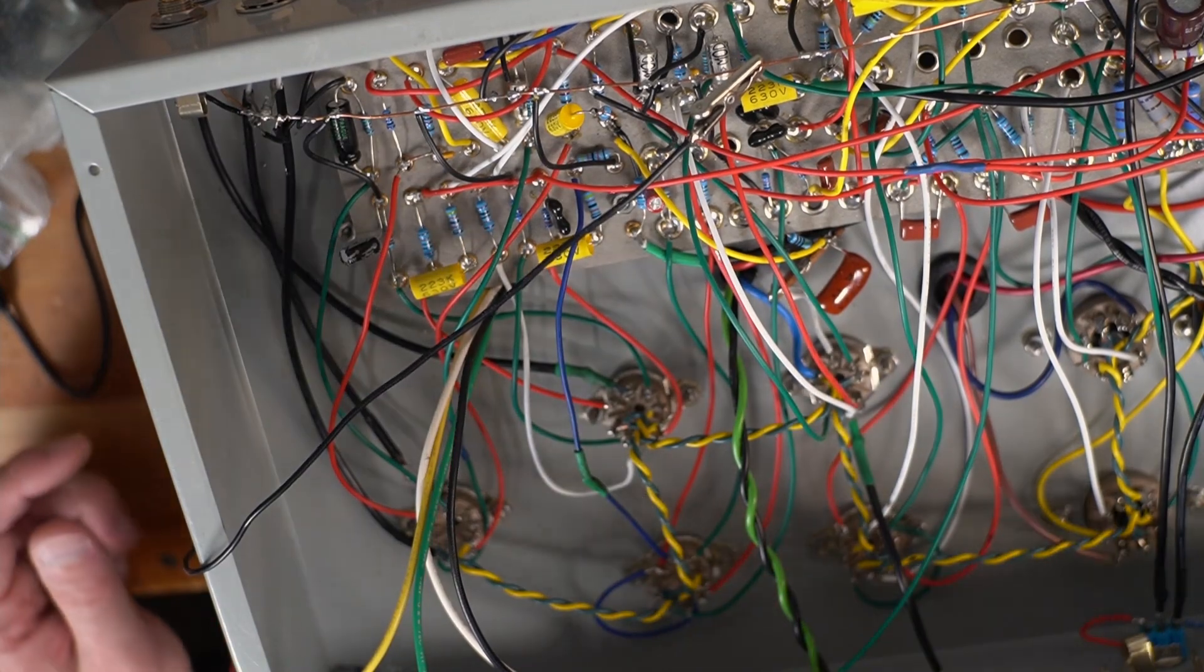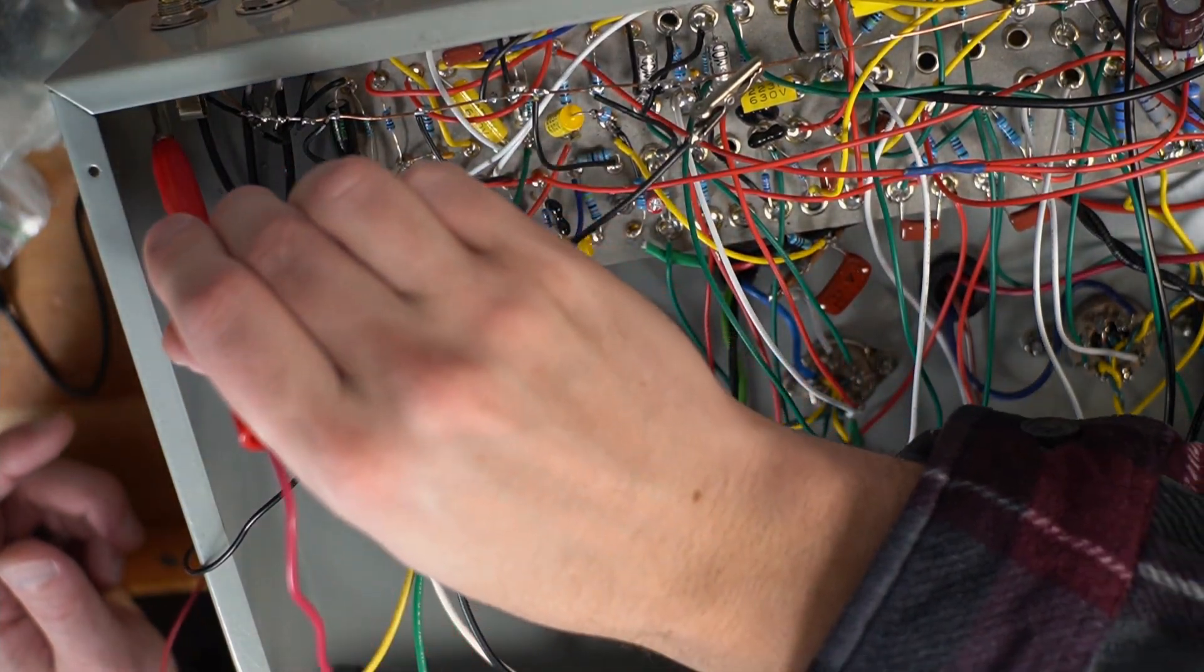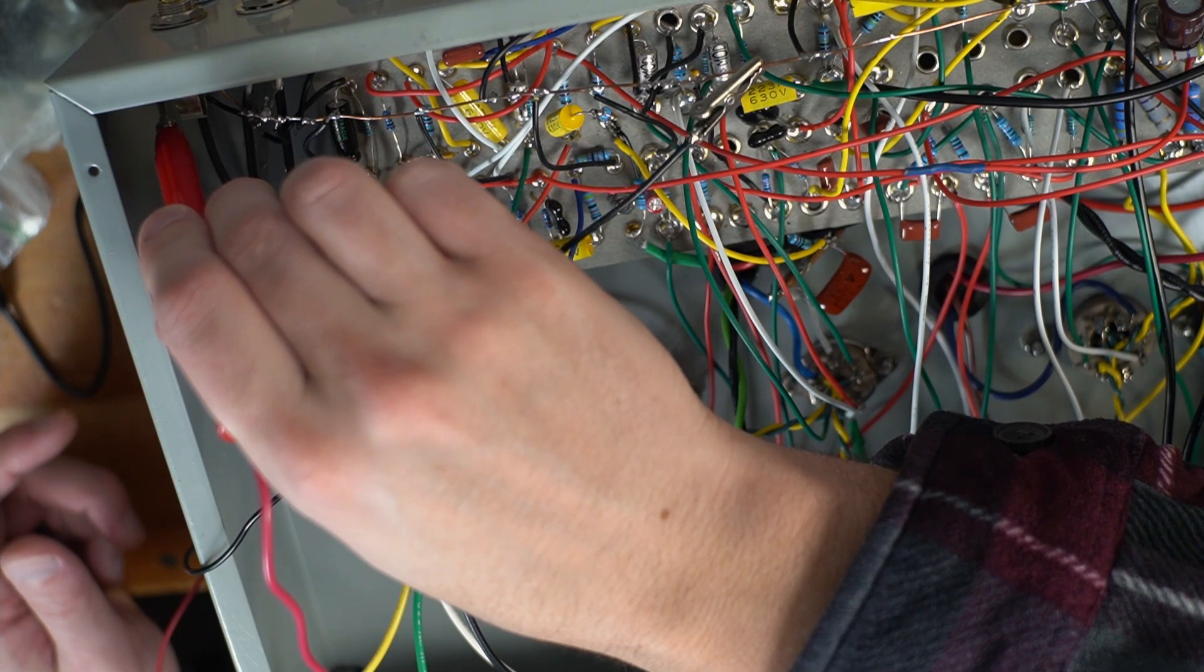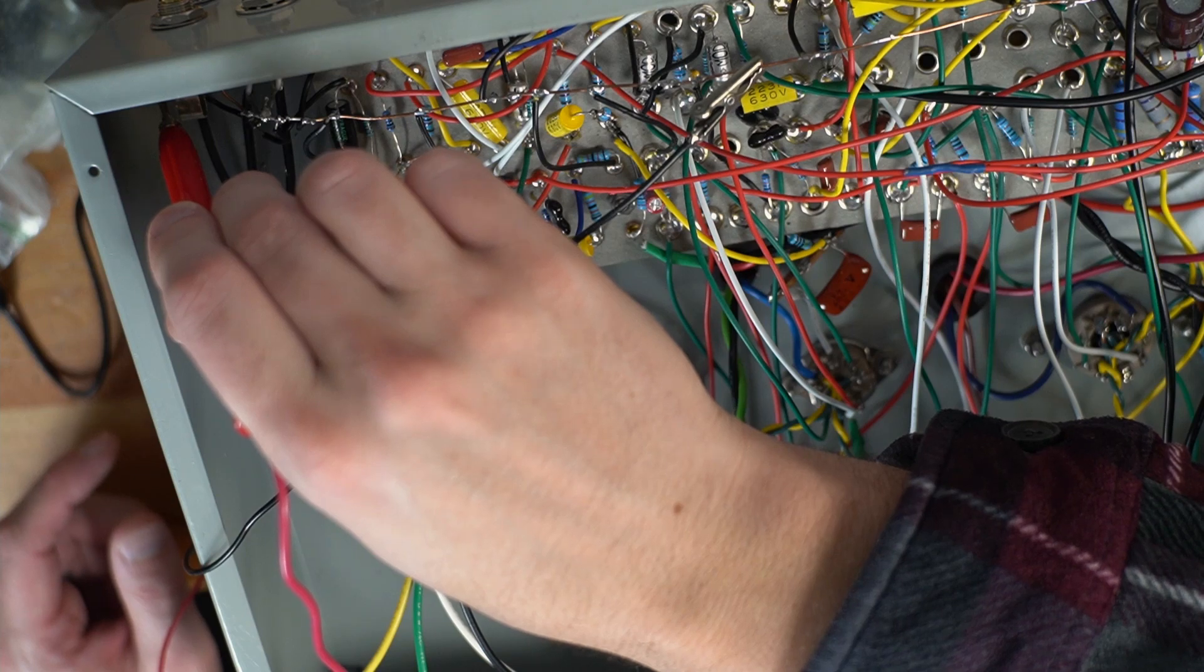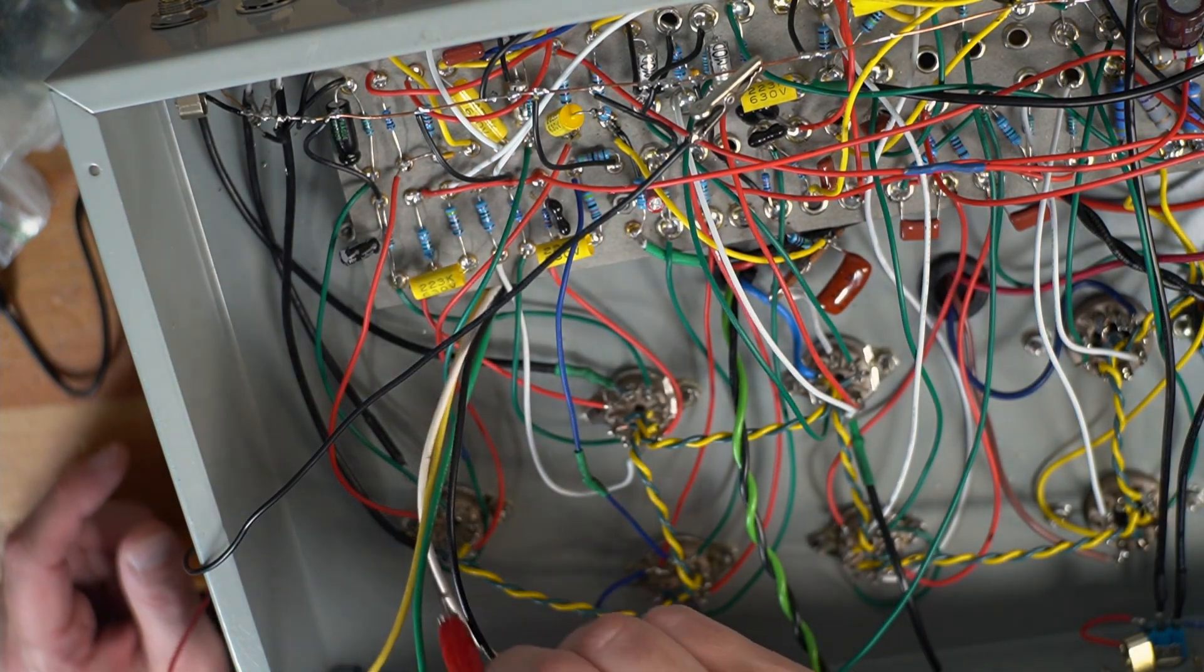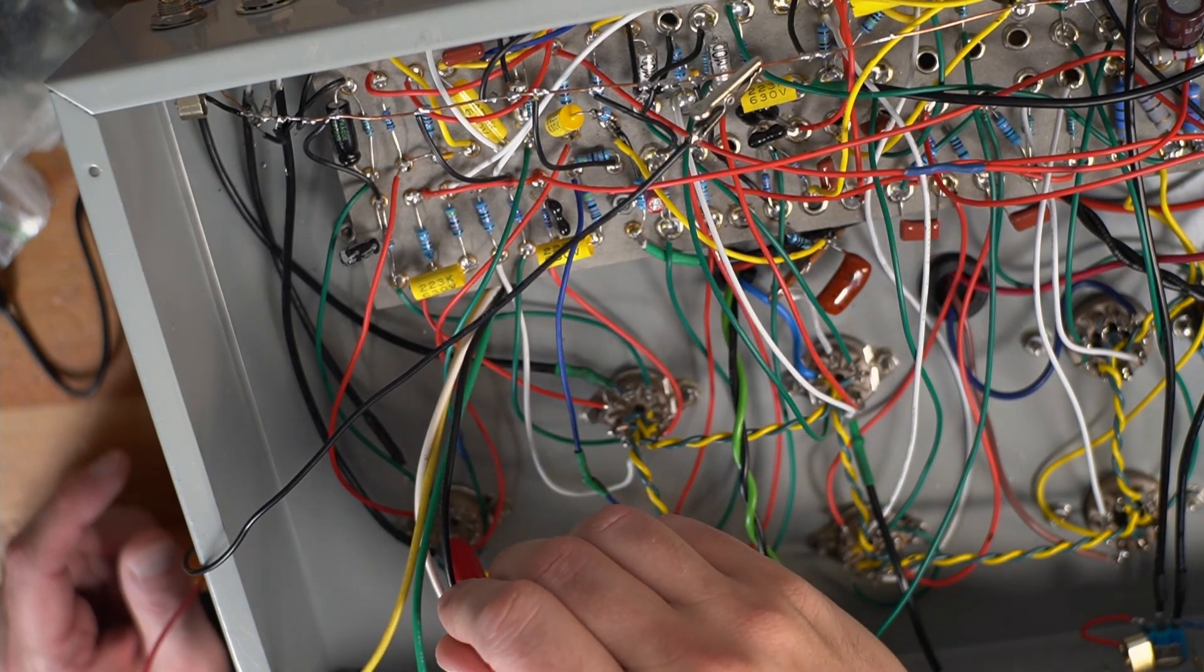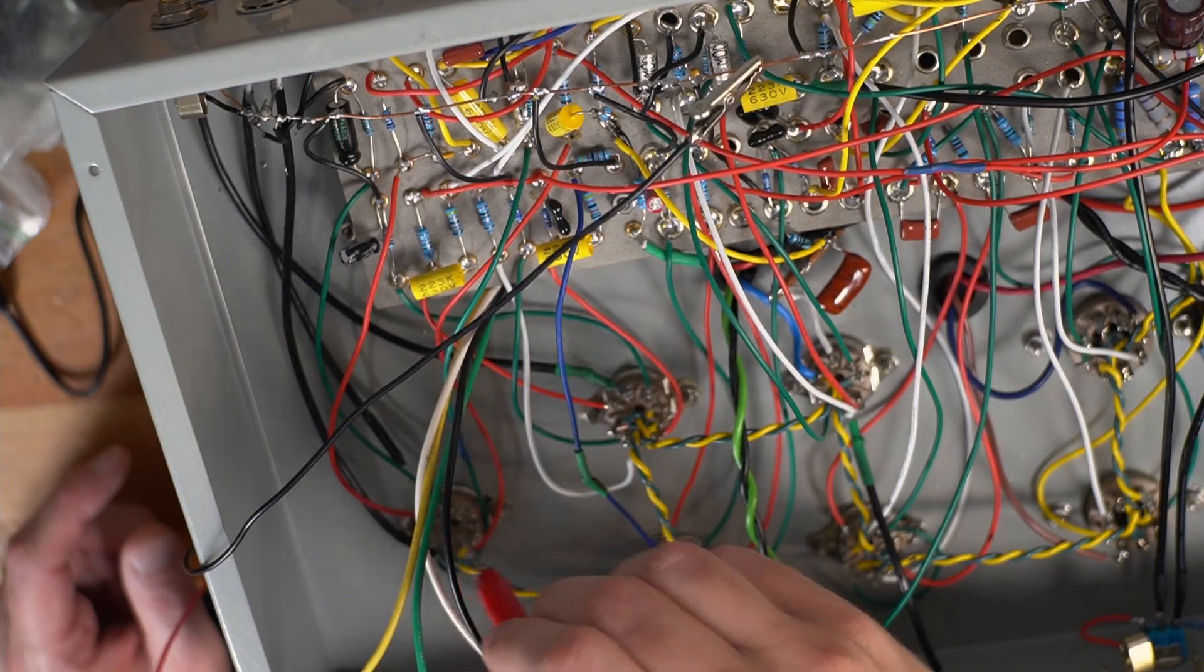And then I've got my probe here. I'm going to turn my little practice amp on, and I'm just going to take this probe and put it right on the input. So you can hear there's my music playing through just fine. So now I'm going to go here to see if it makes it to—okay, so far so good. There's the grid of my first preamp tube.